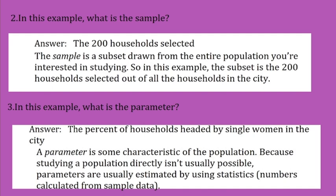A parameter is some characteristic of the population. Because studying a population directly isn't usually possible, parameters are usually estimated by using statistics—numbers calculated from sample data.